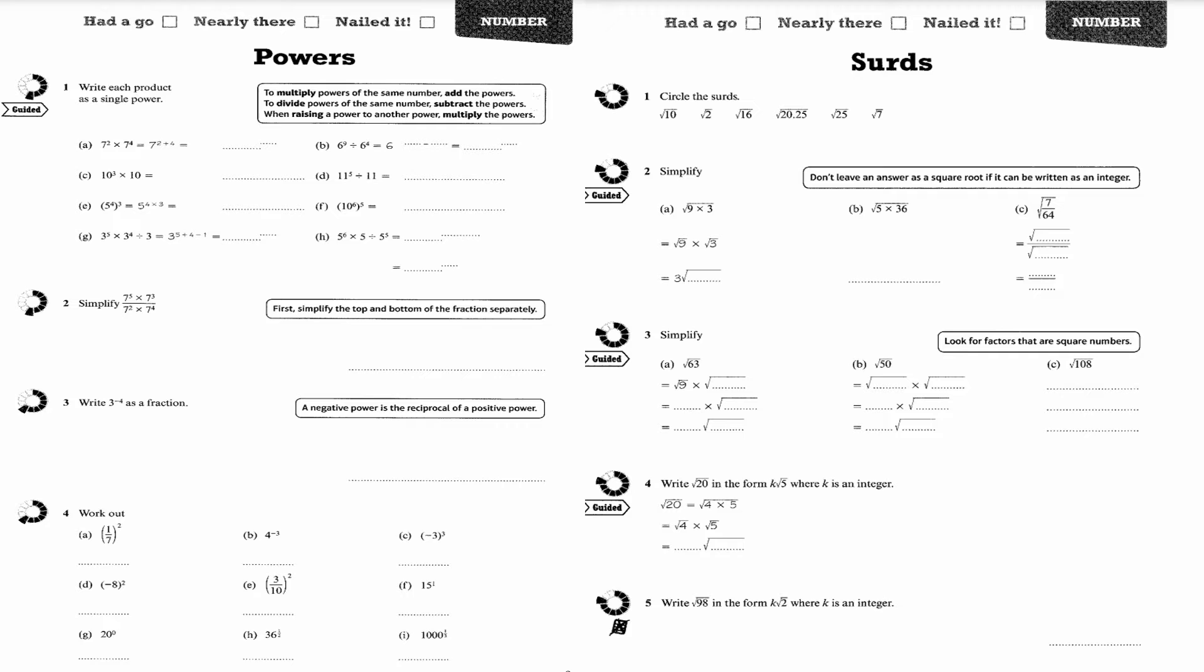We're going to start with question number one. Write each product as a single power. 7 squared times 7 to the 4. I add the powers and it's the same base, I just add the powers. So I'm going to have 7 to the power of 7. 4 plus 3 is 7. Part C, 10 cubed times 10, and again it's going to be 10 to the power of 4.